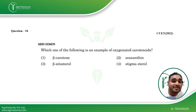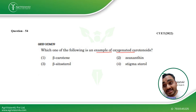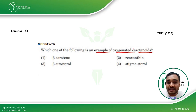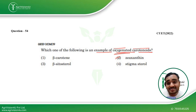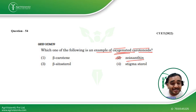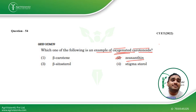Which of the following is an example of oxygenated carotenoids? Carotenoids are pigments found in fruits and vegetables. Oxygenated carotenoids have oxygen attached. Zeaxanthin is the answer — zeaxanthin is an oxygenated carotenoid found in fruits and vegetables. This was asked in CUET 2022.